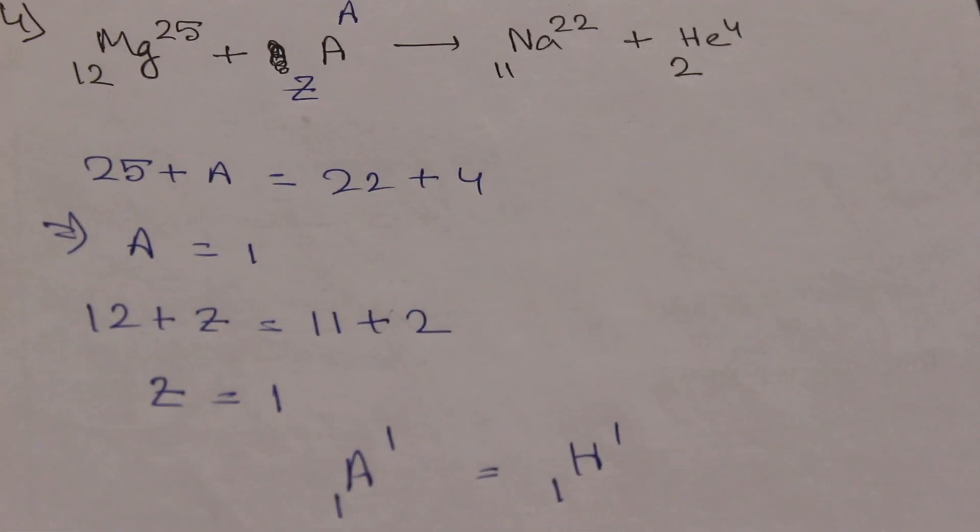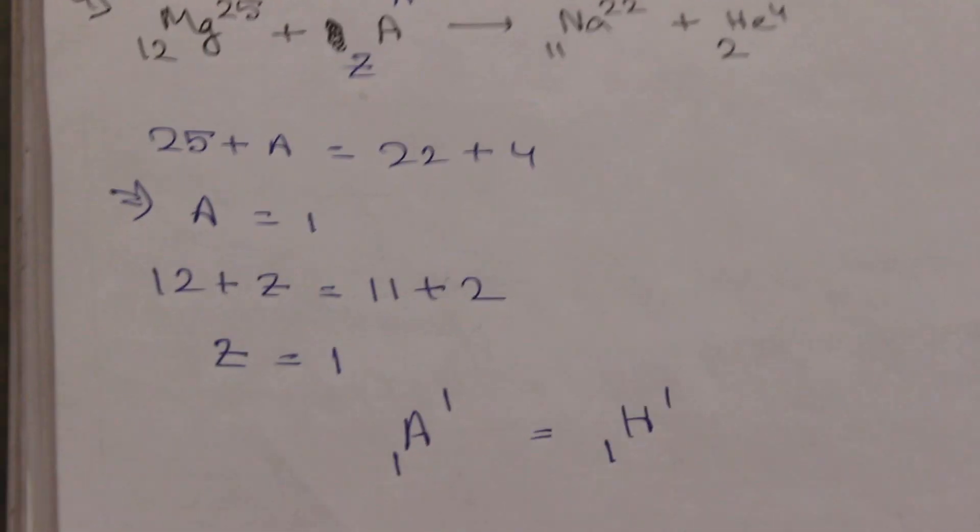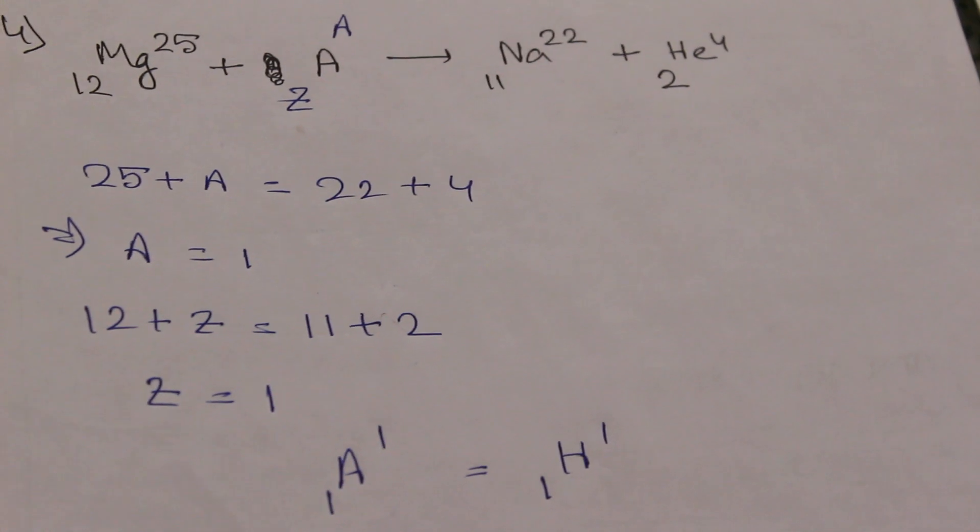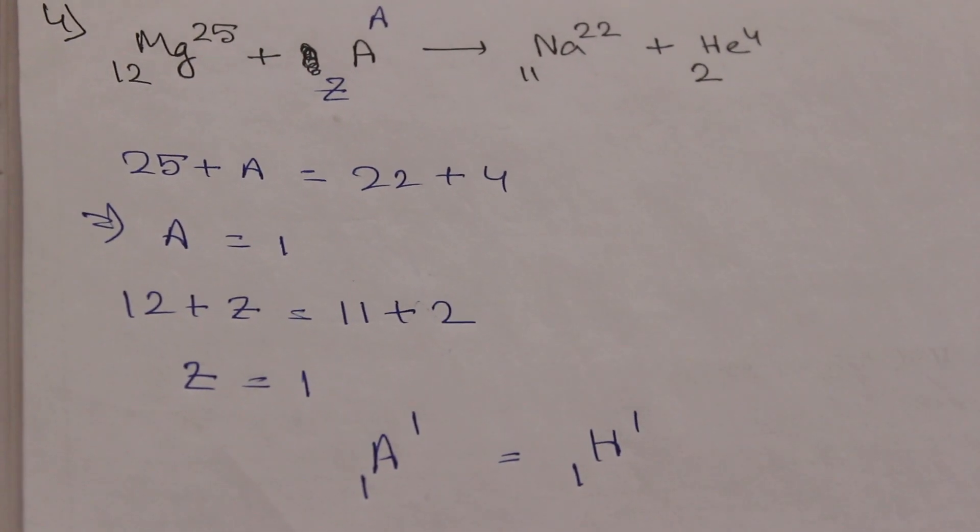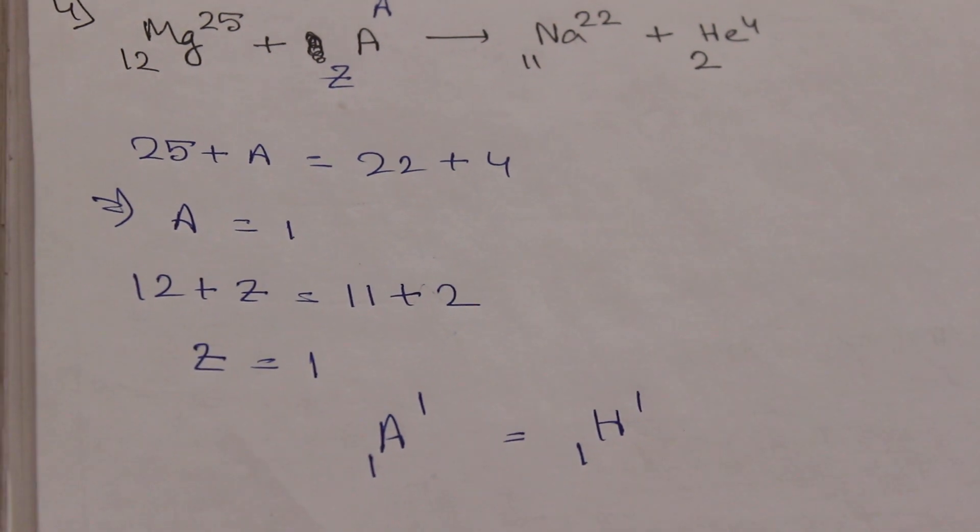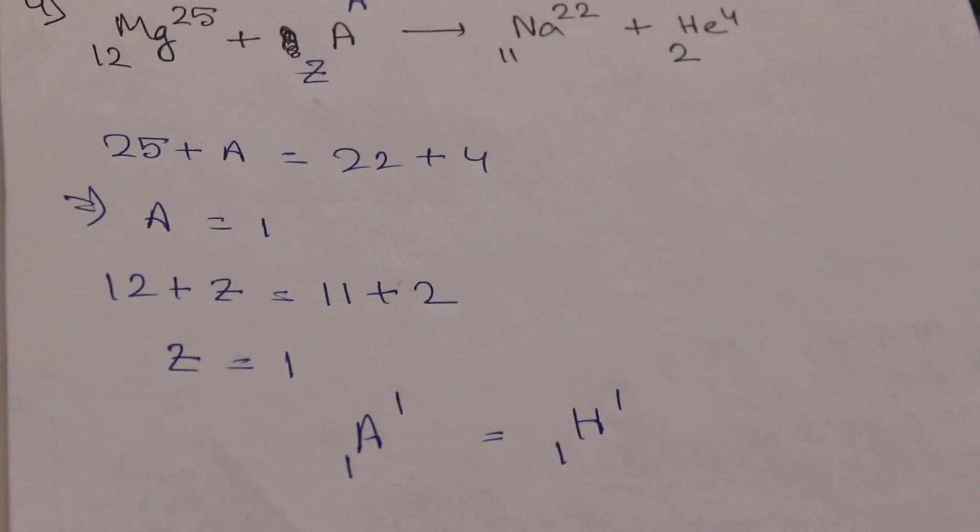This is how we can easily balance the nuclear reactions, just keeping in mind that in both LHS and RHS, sum of mass number will be same and sum of atomic number will be same. Understood?